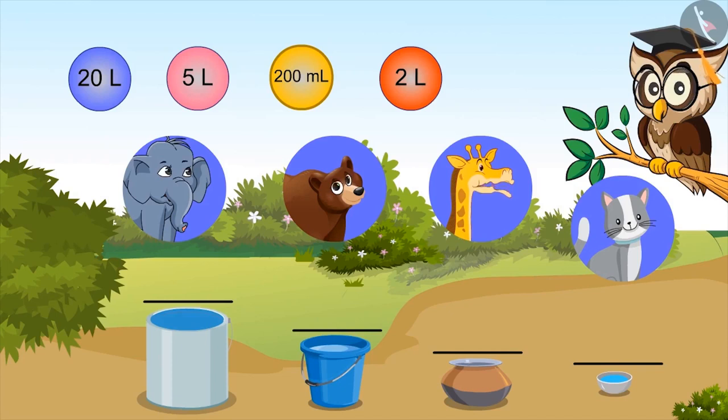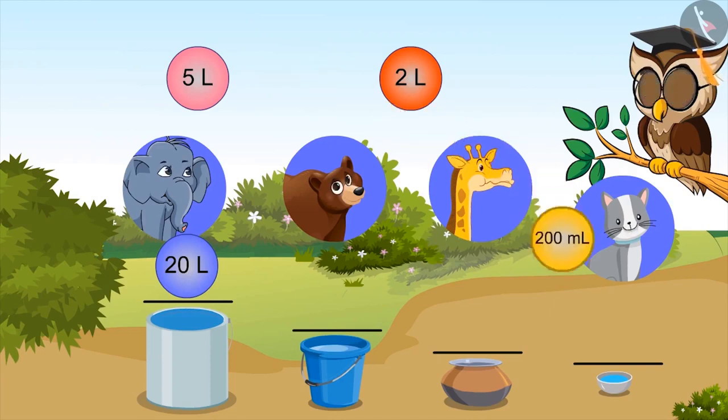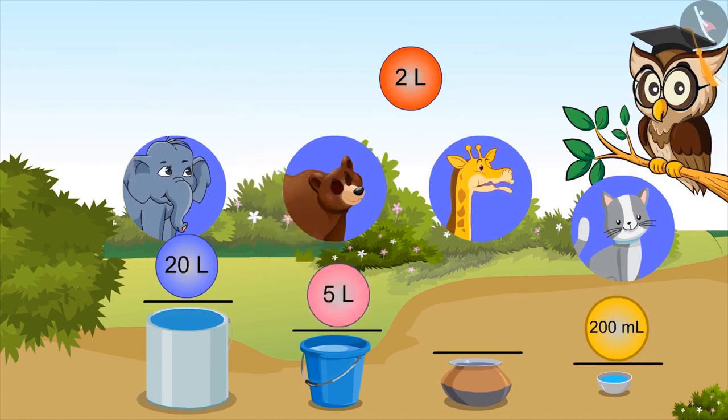So two thousand milliliters is much less than one liter. So according to you, what will be the right answer? According to me, a drum has a capacity of 20 liters. Very good. Okay, so the capacity of bowl will be 200 ml. Right. Now you all have got it. Capacity of bucket is 5 liters and capacity of utensil is 2 liters.